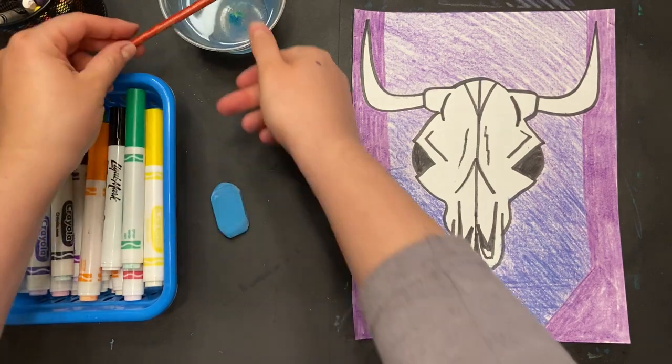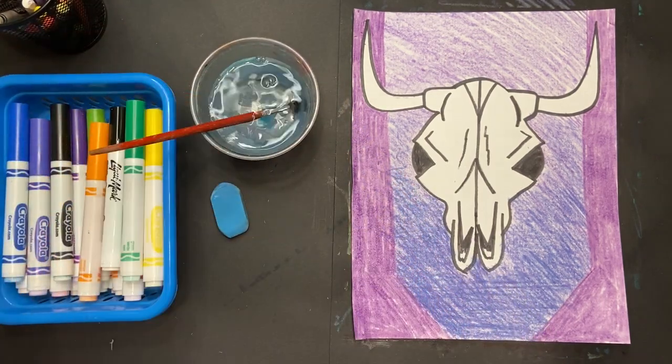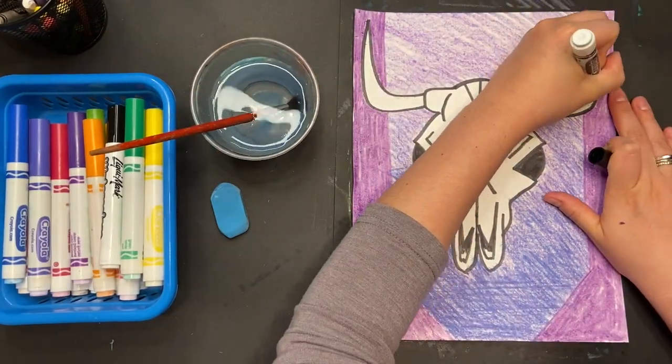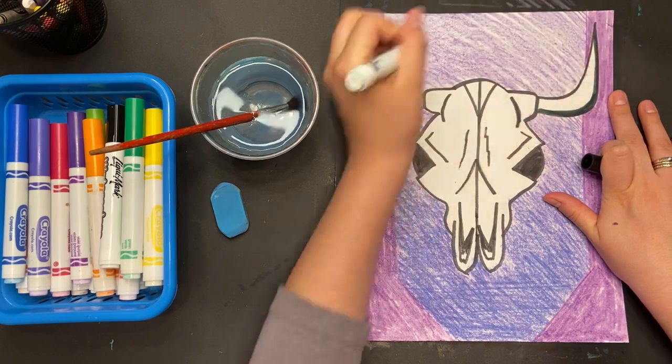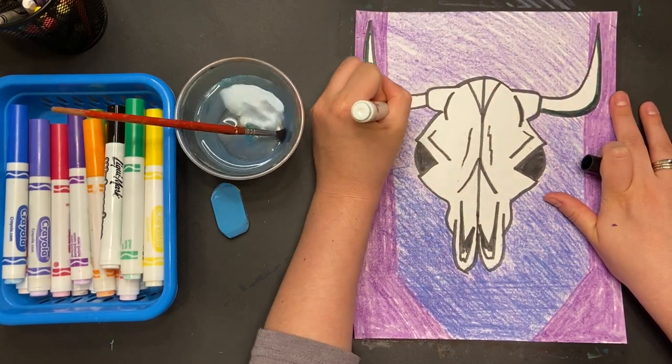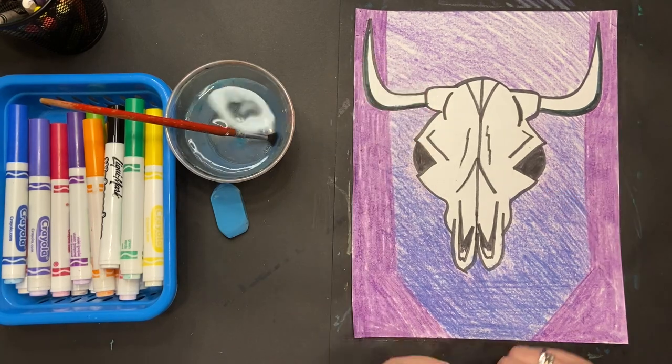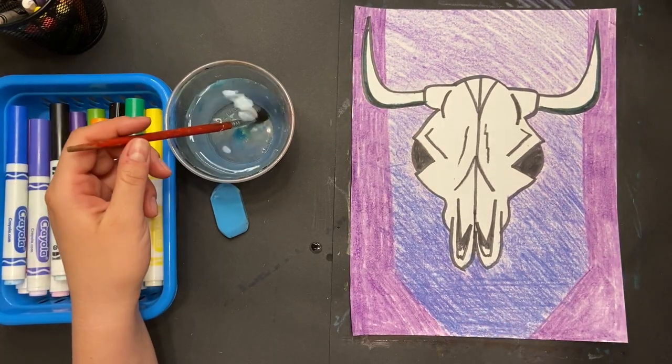All right, at this point it's time to finish up the skull. So I have my water ready and I'm just going to add a little bit more black along the bottom half of my horns so that I'll have even more shadow.